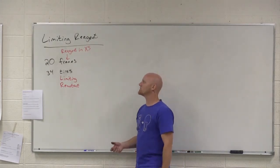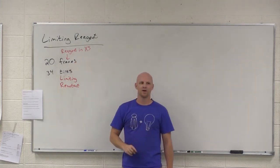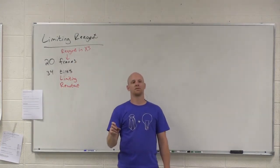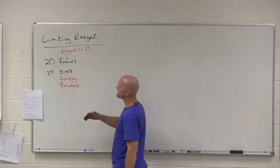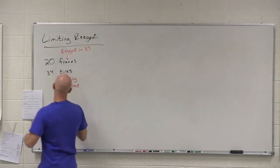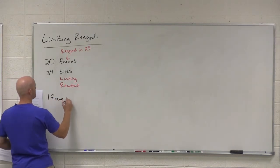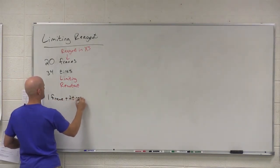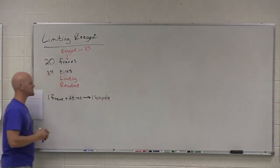And also we can compound the issue here because with atoms and molecules we don't usually tell you how many you have. We often tell you how much mass you have instead. And you've got to convert it to moles before you can make such a comparison. So notice if we want to make a chemical reaction out of this, we could say that one frame plus two tires gives you one bicycle. Life is good.